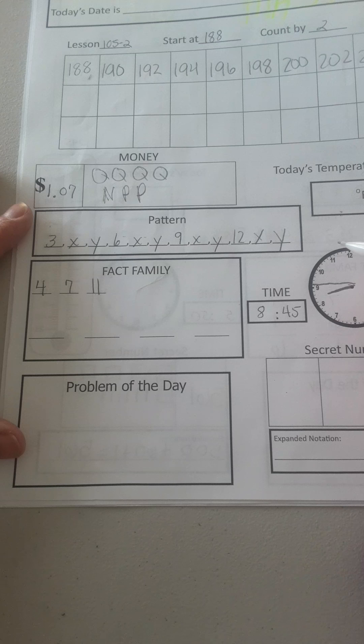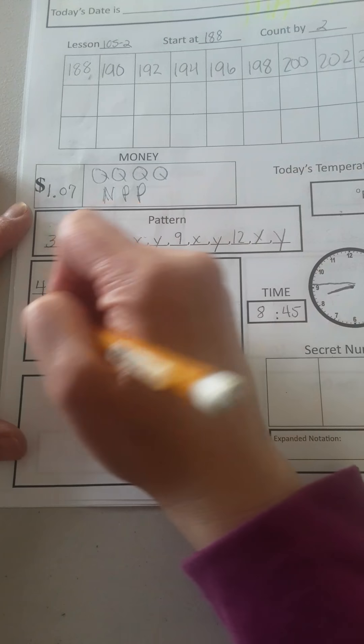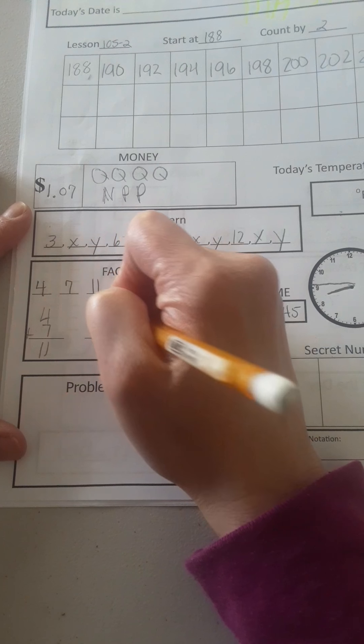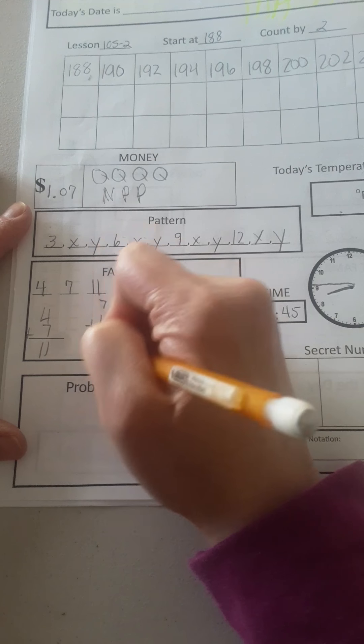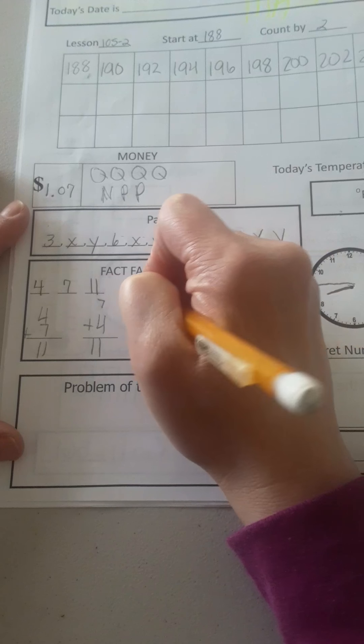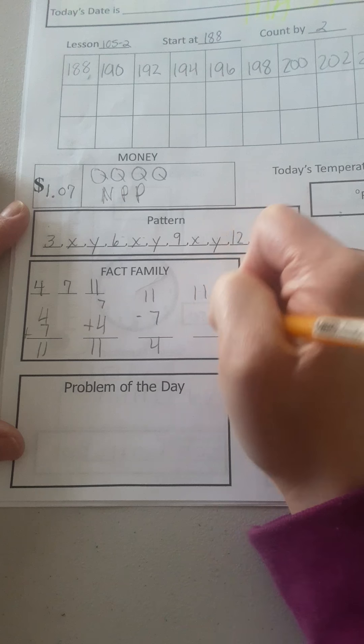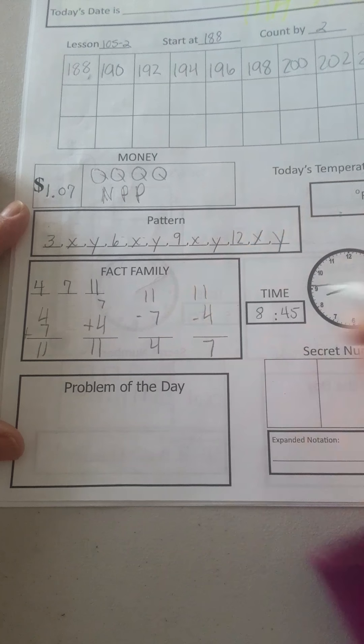Fact family, 4 plus 7 is 11. 7 plus 4 is 11. 11 minus 7 is 4. 11 minus 4 is 7.